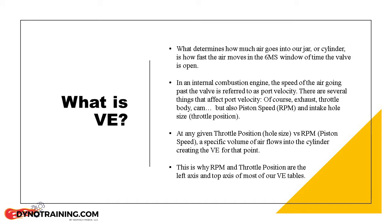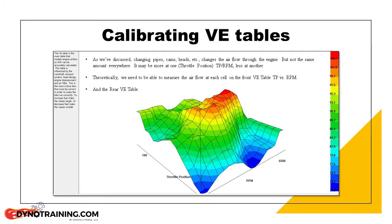We have already discussed how port velocity affects VE, so let us look at how throttle position and RPM influence port velocity. Higher RPMs have higher piston speeds, and the speed the piston travels affects port velocity. Changing the throttle position changes the hole size the air flows through, which also affects port velocity. At any given throttle position versus RPM, the engine will flow a specific amount of air. By holding the bike at the RPM and throttle positions that match the cells on the VE table, we can check the airflow at each cell and correct it to match the actual airflow through the engine with the new hard parts.